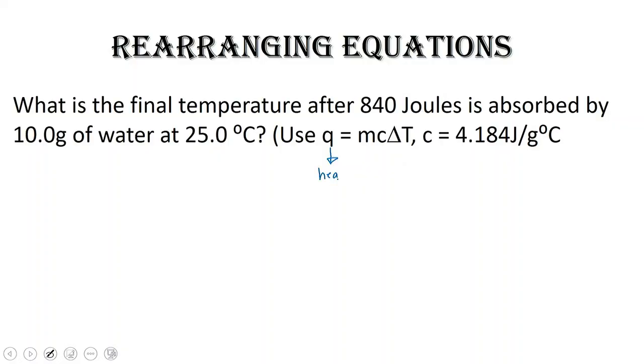Q is the amount of heat. M is the mass in grams. C is what we call the specific heat. And delta T is essentially T final minus T initial.